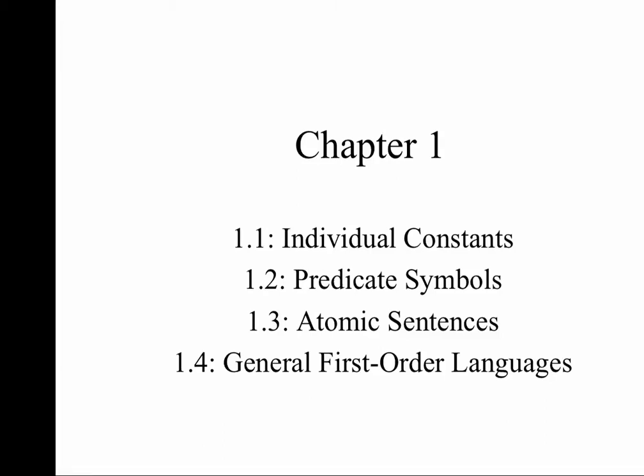We begin our discussion of formal logic using Barwise, Etchemendy, and Barker-Plummer's Language, Proof and Logic with Chapter 1. The focus is on the smallest units of our artificial language, or the building blocks. In this video we will cover Chapter 1, Sections 1 through 4, before we move on to Chapter 2, which covers the basics of inferences — specifically how we can know that an inference is logically correct or not.